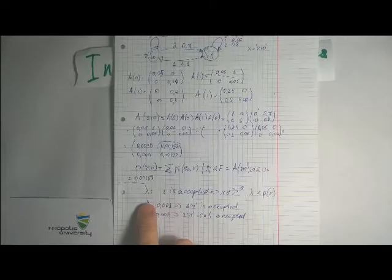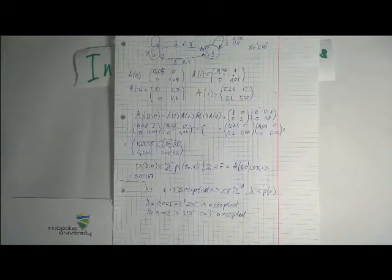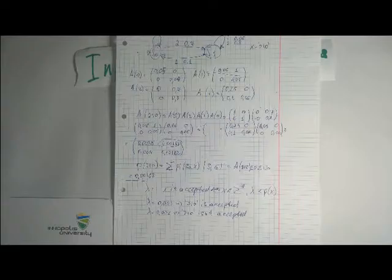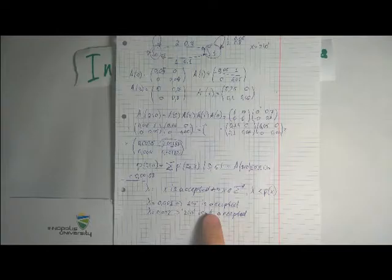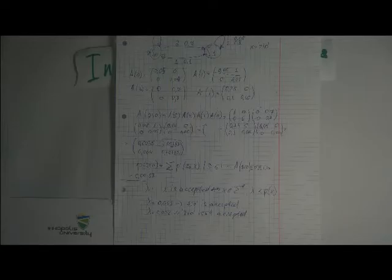For answering this question, there exists a cut point lambda. If X is the input string, Y is the alphabet, and probability of X is more than lambda. For our example, if lambda is this point, then X is accepted. If lambda is this point, then X is not accepted.